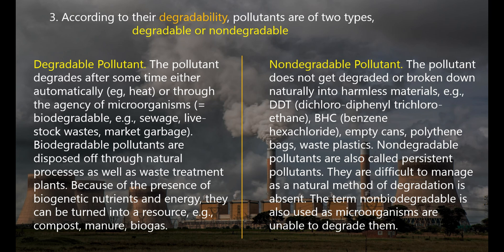But non-degradable pollutants like DDT are not easily degraded. They have long-ranging harmful effects — from mosquitoes to human beings. Polythene is also used and is very dangerous because it is not degraded. A degradable pollutant degrades after some time, either automatically or through the agency of microorganisms.